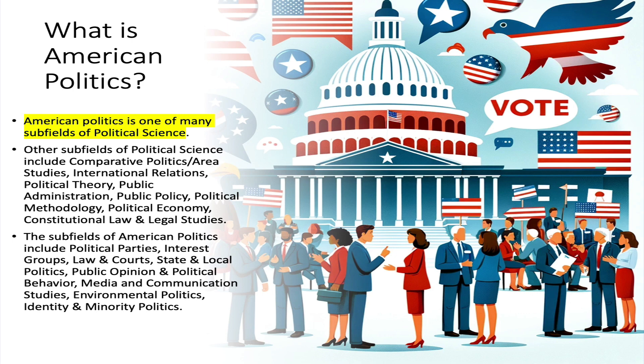What is American politics? Not as a process, but as a subfield of political science. It is one of many subfields. Other subfields of political science include comparative politics (also known as area studies), international relations, political theory, public administration, public policy, political methodology, political economy, and constitutional law and legal studies.